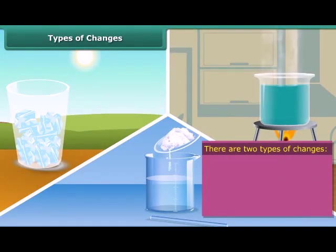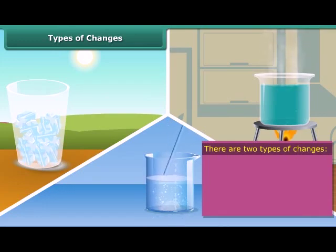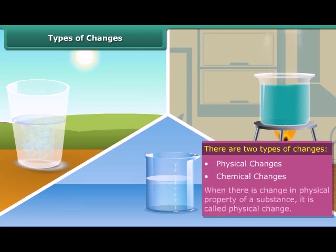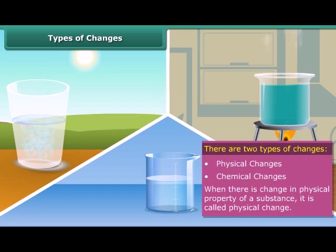Changes are of two types: physical change and chemical change. In this module, you will study physical changes. When there is a change in properties such as shape, size, color, and state of a substance, it is called a physical change.